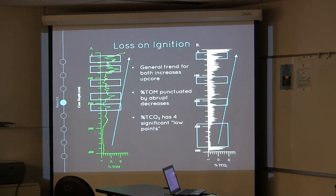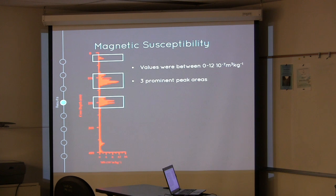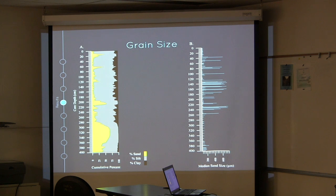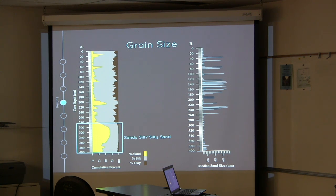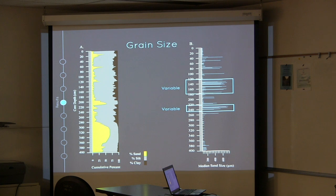For magnetic susceptibility, our values were between 0 and 12. We see three prominent peaks with sharp basal contacts as well as two smaller peaks at the base of the core. For grain size, the yellow is percent sand, the gray is percent silt, and the black is percent clay. We see at the base of the core our coarser material — silty sand — and as we go up, it gets finer, showing a fining upward sequence. However, there are a few coarse layers interbedded in between.